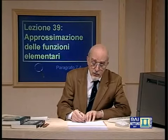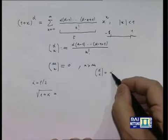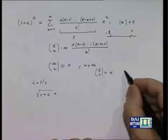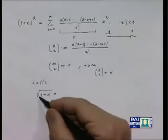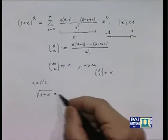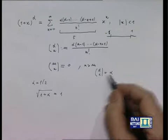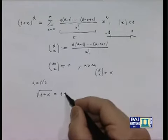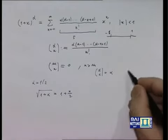C(α,1) uguale a alfa; se alfa è un mezzo, è un mezzo. Quindi il valore della funzione per x=0 è 1, e C(α,1) = 1/2, quindi 1 + x/2.